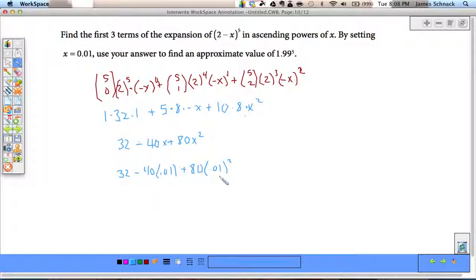Okay. So, that's going to be 0.001. 1 over 100 times 1 over 100 is 1 over 10,000. That's four decimal places. Times 80.